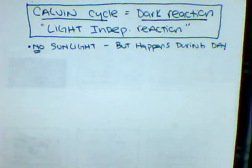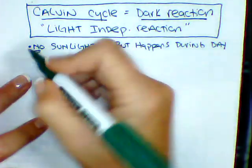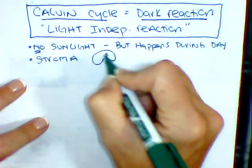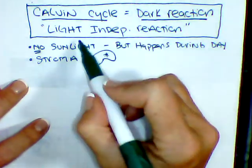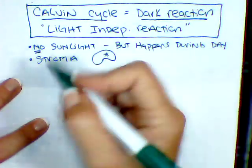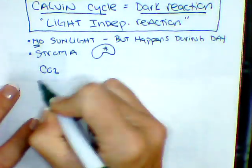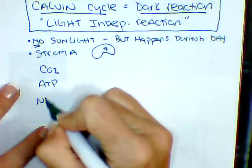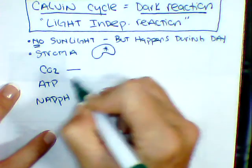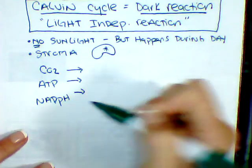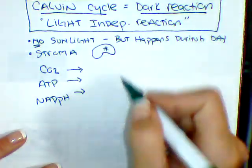All right guys, so let's talk about what happens with this energy we just created. This is actually known as the Calvin cycle. Again, no sunlight is actually required for this. It does happen inside the stroma area, which is the empty spot of that chloroplast. This is also known as the light-independent reaction. Now, our players in this theatrical game here are your CO2, our ATP, and our NADPH. These guys are going to go into our Calvin cycle, which is named after Melvin Calvin in the 1940s. They're going to go through this cycle.